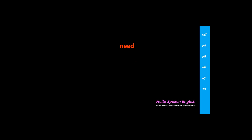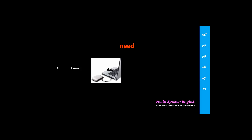Let's move to the next expression. Please watch the animation. There is a question mark, "I," "need," "an external hard drive," the word "data," and "regularly." I want you to begin with "why." Why do I need? To do what? To back up. Back up what? My data. And how? Regularly. The full sentence is: why do I need to back up my data regularly?